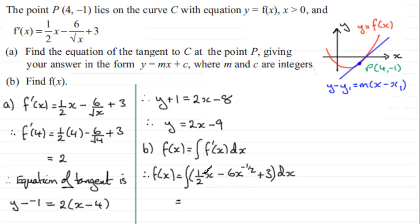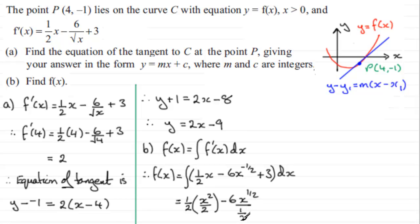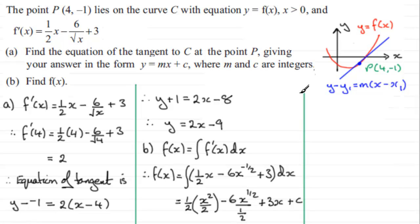In the usual way when integrating, we add one to the power and divide by the new power. For the first term: ½ multiplied by x^2 divided by 2. For the next term: -6, add one to the power of -½ gives +½, divided by the new power ½. For the constant, we put an x against it: +3x. And we mustn't forget the constant of integration +c — k is also another common choice.